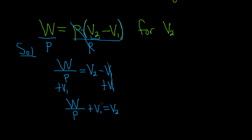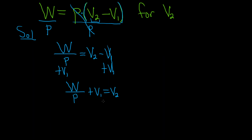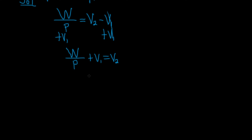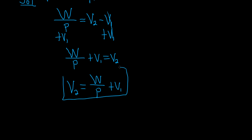That's pretty much it. However, most people write their answers with what they solved for on the left, so let's write it backwards: v2 is equal to w over p plus v1. And that would be a perfectly acceptable answer.